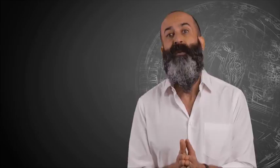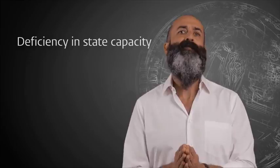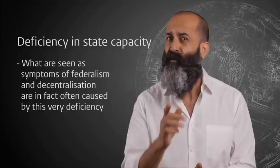These scholarly angles have different starting points and different intellectual foundations. So adding them on top of one another might in fact obscure the picture. However, one thing seems to be common to many of these analyses, and indeed to the disappointments with federalism and decentralization, and that is the underlying deficiency in state capacity. What are seen as symptoms of federalism and decentralization are in fact often caused by this very deficiency.